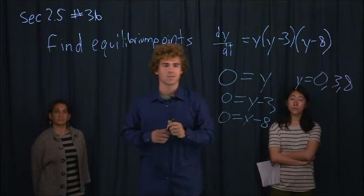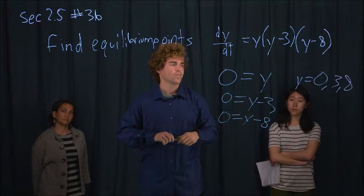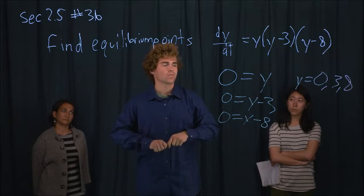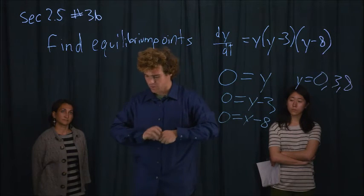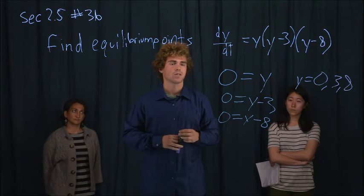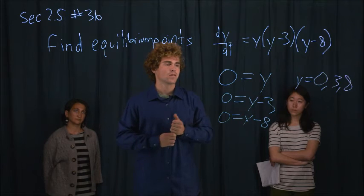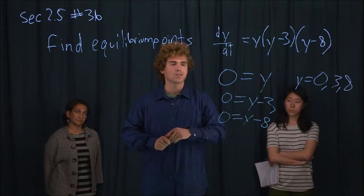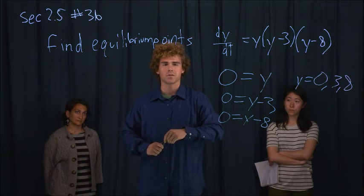When we put the derivative equal to 0, what else do we call those equilibrium points? We also call those equilibrium points the critical points. What do we use them for? We use them to see where the function is changing slope.